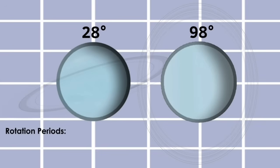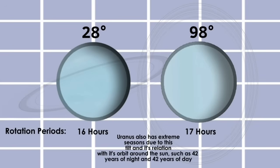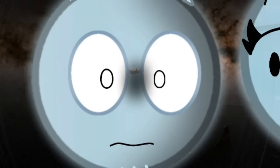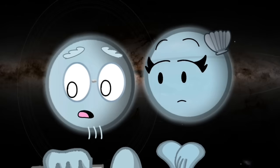Unlike Neptune, I have an extreme axial tilt. It's around 98 degrees, which basically means I'm rolling on my side. How this happened... I'd rather not get into that right now.